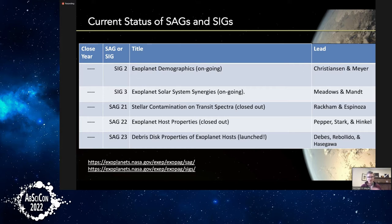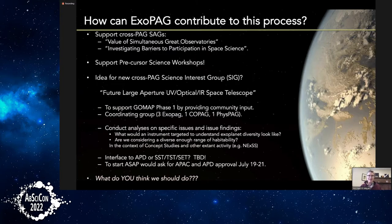The two ongoing SIGs are exoplanet demographics — updating the SAG-13 eta-Earth initiative — and a SIG led by Vicki Meadows and Kathy Mant on synergies between exoplanets and solar system exploration. What can the ExoPAG contribute to this town hall's topic? We're already supporting cross-PAG science analysis groups studying the value of multiple great observatories working in concert, hoping to participate in new efforts to understand barriers to participation by underrepresented groups in space science, and supporting the Precursor Science Workshops. I encourage everyone to join the July workshop.